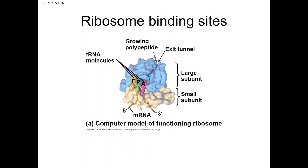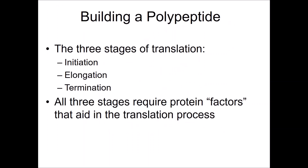This is a molecular model of a ribosome with an mRNA, tRNAs, and a polypeptide chain. There are three stages of translation, just like there were for transcription and DNA replication: initiation, elongation, and termination. All three stages require protein factors that aid in the translation process, which I will not be covering in this lecture.